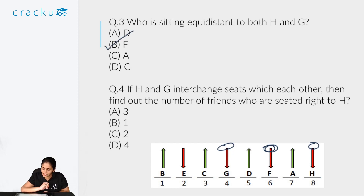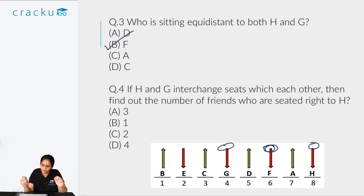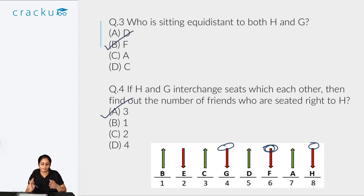The fourth question asks: if H and G interchange seats, how many friends are seated to the right of H? This boils down to asking how many friends are to the right of G's original position. G is facing south, so if you imagine facing south, B, E, and C are to the right. Therefore there are 3 people to the right. It's easy to mistakenly count 4 by looking at the diagram facing north, but you must always assume you are facing the same direction as the person mentioned.